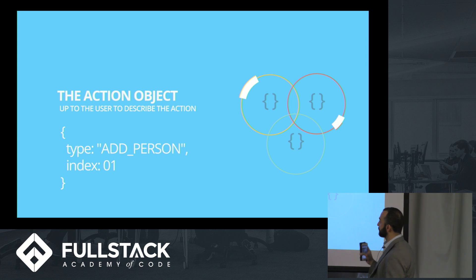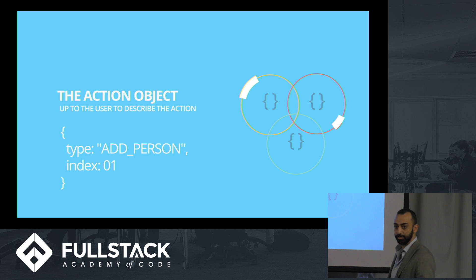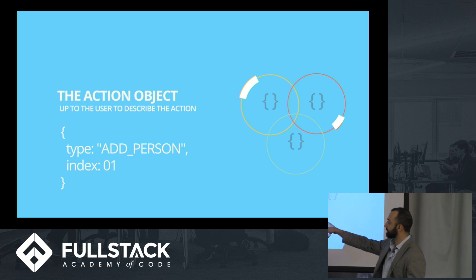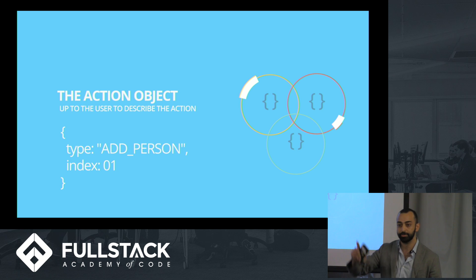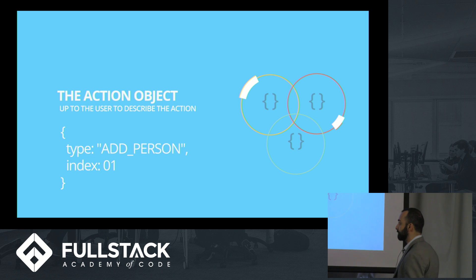One of the ways we do this is through the action object. An action object is basically just an object that describes what the state changes to. It's the smallest amount of description you can give. The only thing you need is a type, because every single function is checking this type to see: do I know how to handle this specific state change? Then you can add anything else you want — the only required field is type.